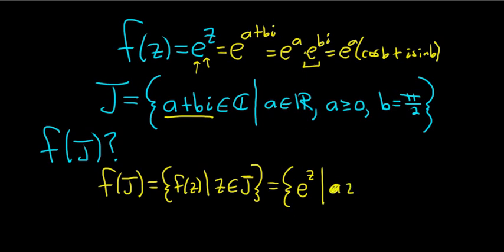So let's write it as z equals a plus bi. And a is a real number, and b is a real number. So I'll say a greater than or equal to 0, and b is equal to pi over 2. We'll assume a is also a real number, so maybe I'll squeeze it in here.